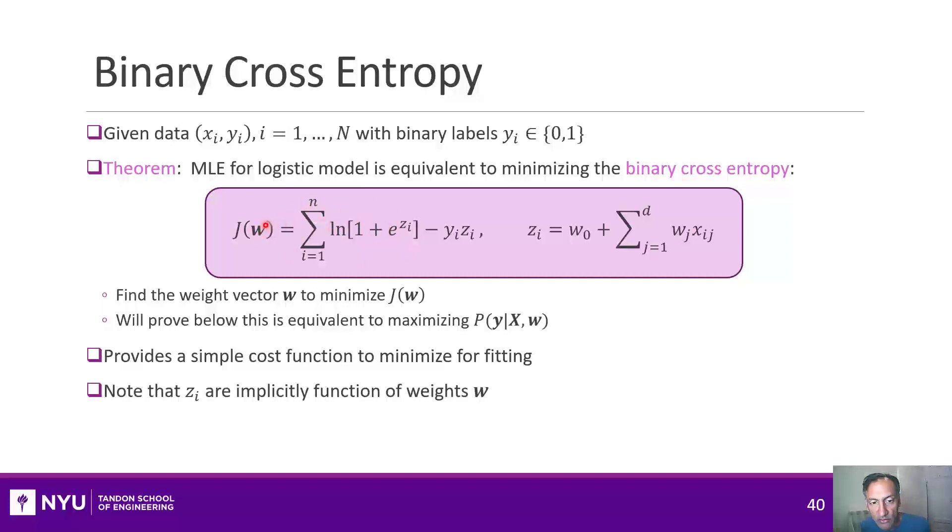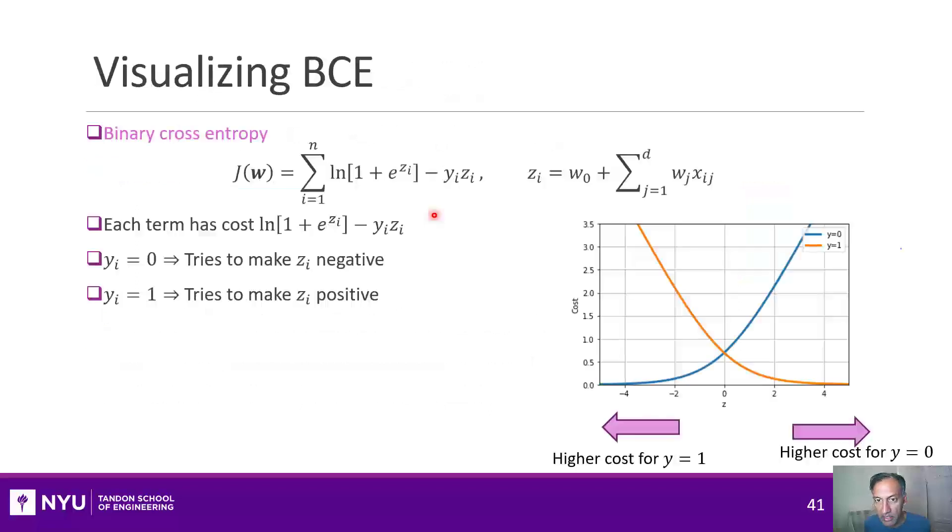Now, one thing about that function. You see here that the function on the right-hand side depends on the zi's, but the zi's depend on the w's through this second equation. So the zi's are kind of implicitly depending on the w's. Now, let me try to, before proving that this is indeed the same as doing the maximum likelihood, let me show you some graphical properties about this function.